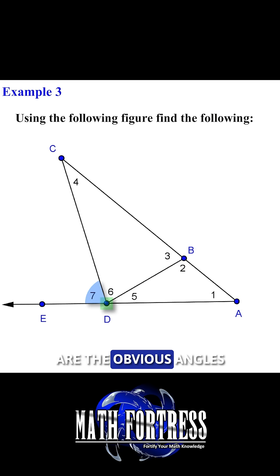These three angles are the obvious angles that have D as the vertex, but it turns out that there are three additional angles that contain point D as the vertex.